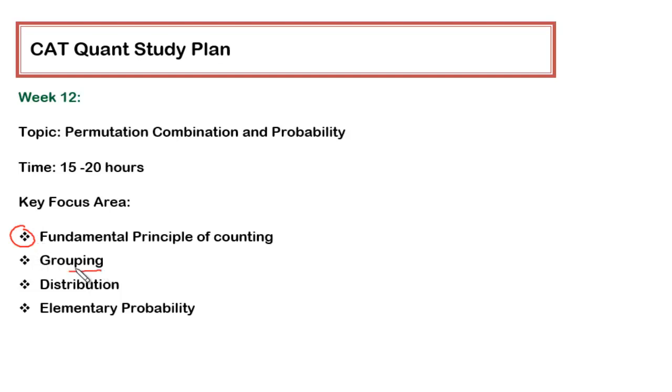For example, there will be questions related to making committees. If there are say five men and six women and we have to make a committee of four people such that there should be at least one woman, so how many ways this can be done. Such kind of questions which we say are based on grouping. There are different ways of approaching these questions depending upon what type of question has appeared.